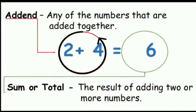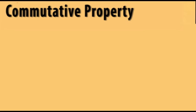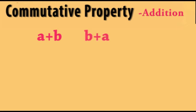Addend means any of the numbers that are added together. Sum or total means the result of adding two or more numbers. Now we are going to discuss commutative property of addition. This property states that if we want to add two numbers, a plus b, it doesn't matter the order — we may also add this as b plus a.